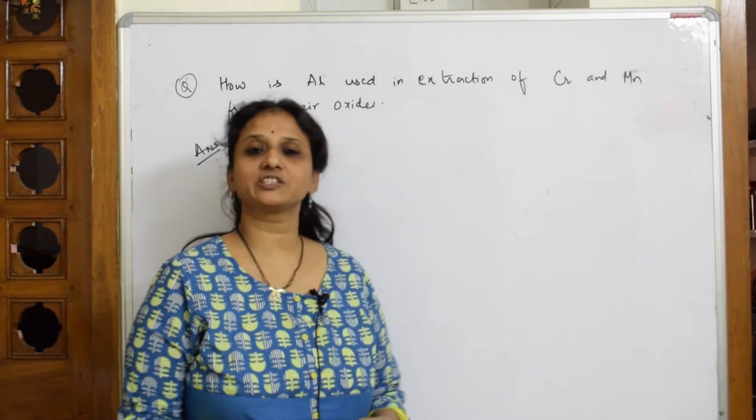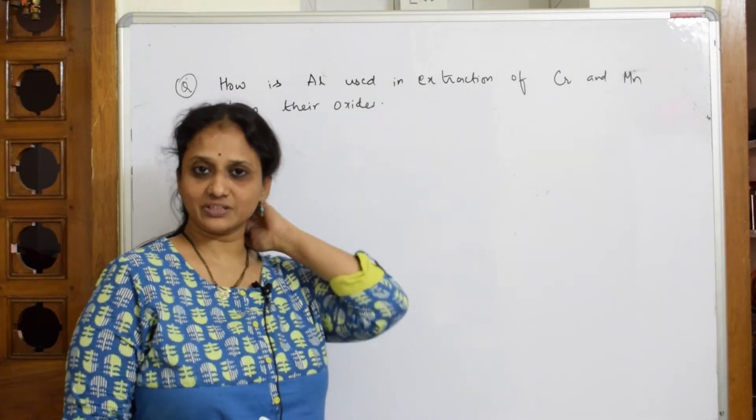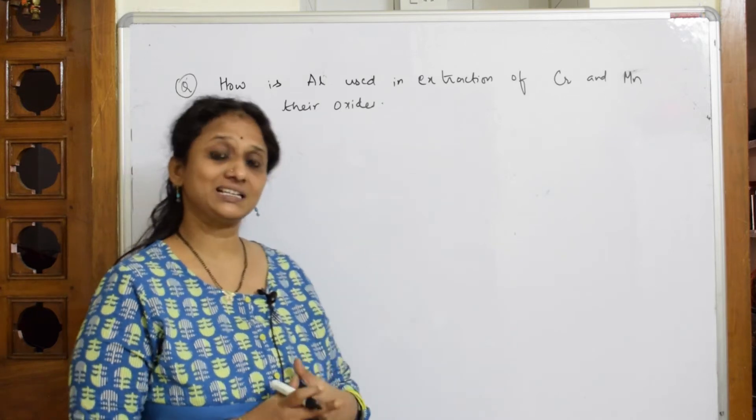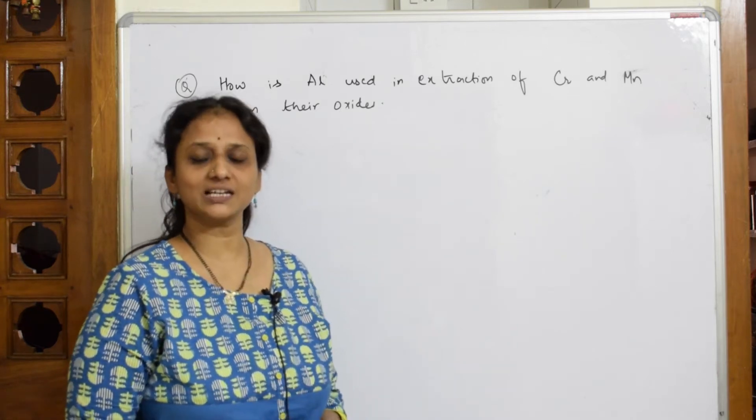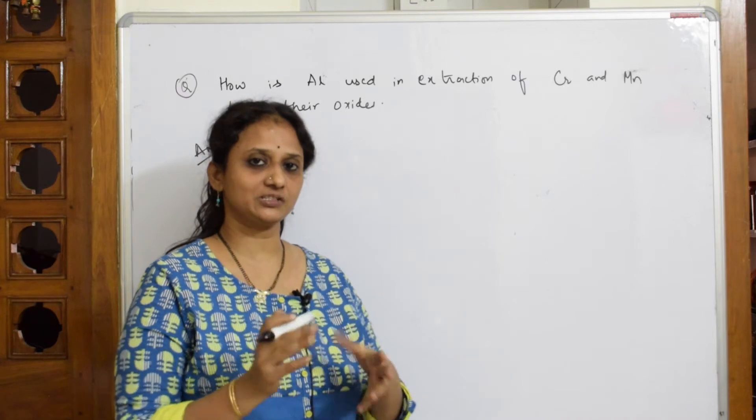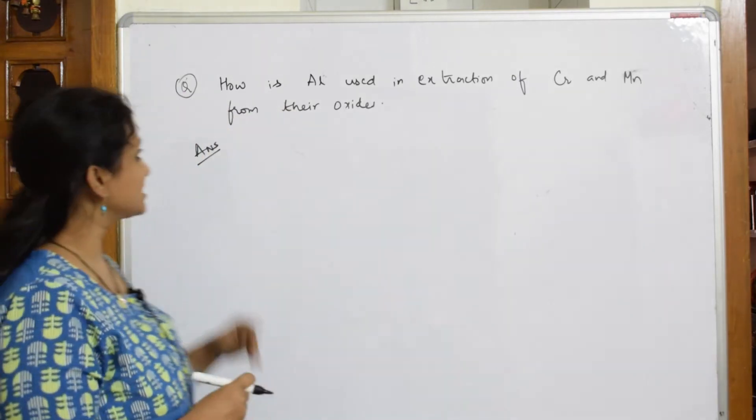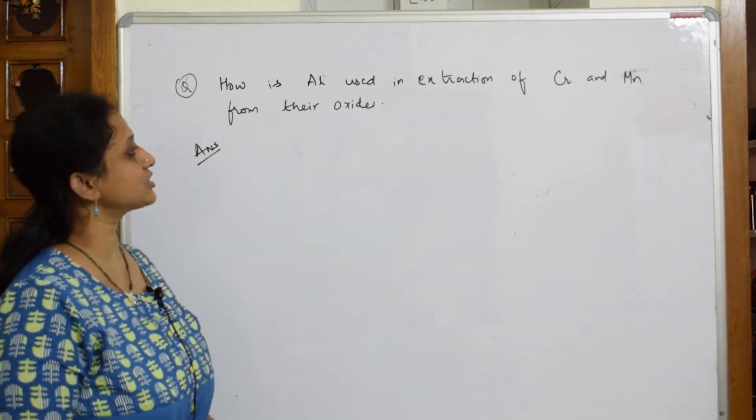Alright, so let us finish off this extraction of metallurgy of aluminum with this question. What does this question say? How is aluminum used in extraction of copper, chromium, and manganese from their oxides? So basically they are asking us the uses of aluminum here.